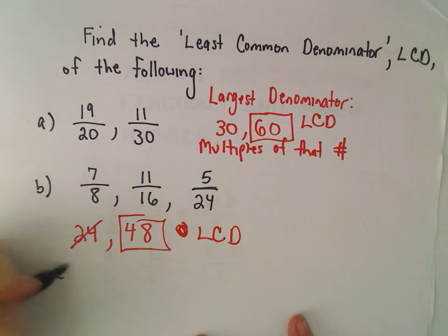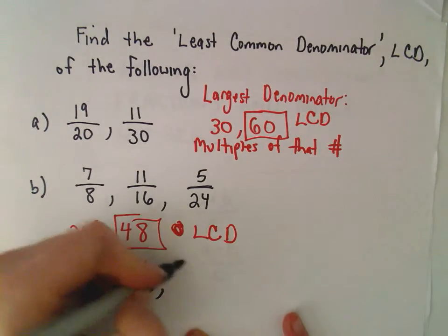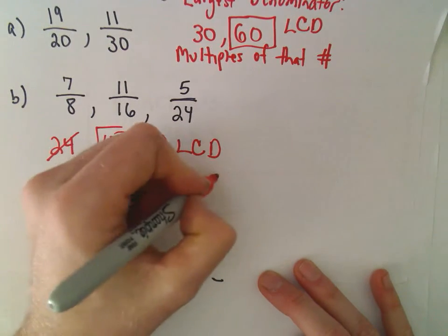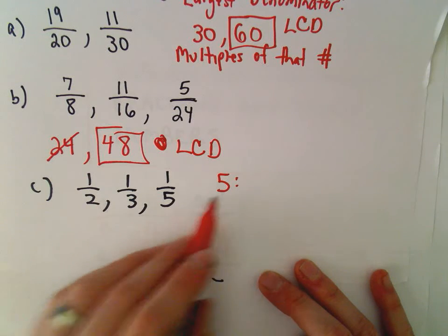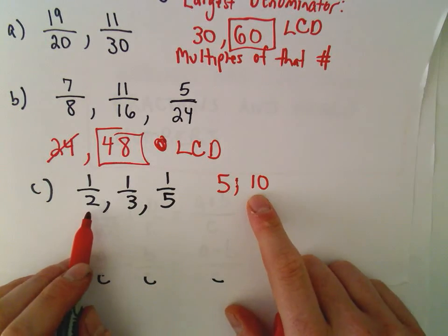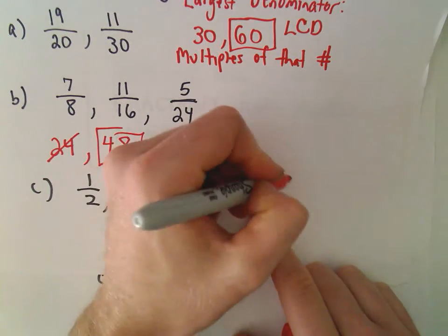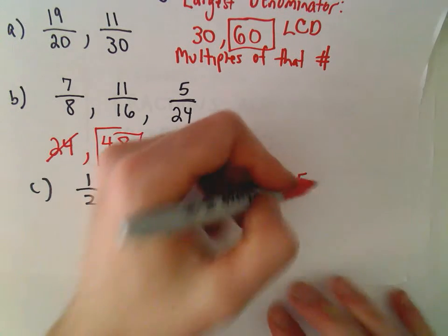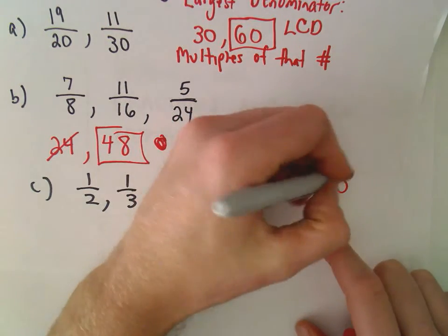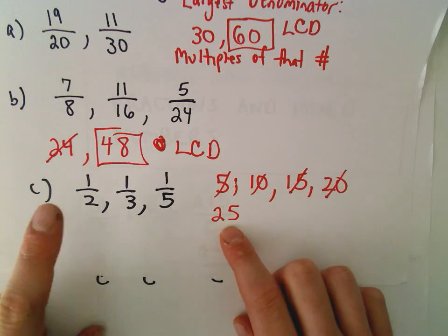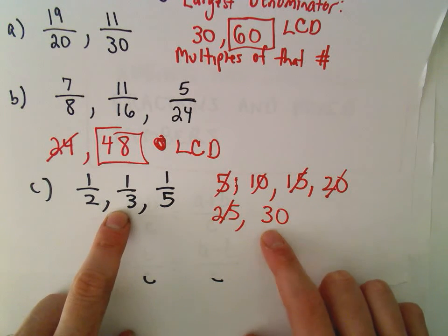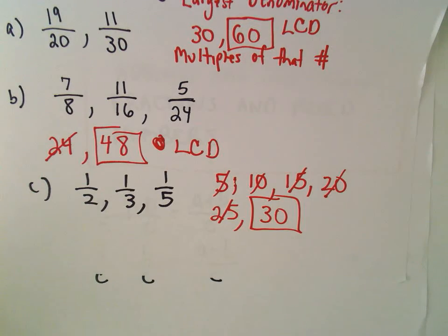Let's make up one more example. Suppose we have 1 half, 1 third, and 1 fifth. So let's find the least common denominator. The largest denominator is 5. Well, 5 is not divisible by 2 and 5 is not divisible by 3. So let's look at the next multiple: 10. 10 is divisible by 2, but 3 doesn't go into 10, so that doesn't work. Next multiple is 15 — not divisible by 2, so that doesn't work. 20 is divisible by 2 but not by 3, so that doesn't work. 25 is not divisible by 2, so that doesn't work. Let's look at 30 — 30 is divisible by 2, it's also divisible by 3, and it's also divisible by 5. So 30 is going to be the least common denominator.